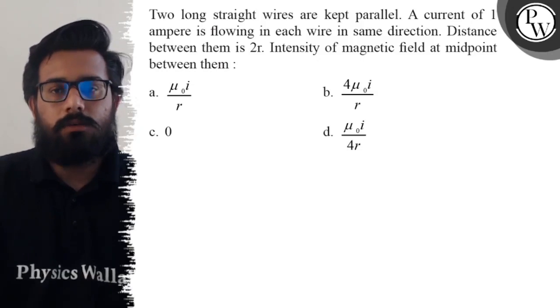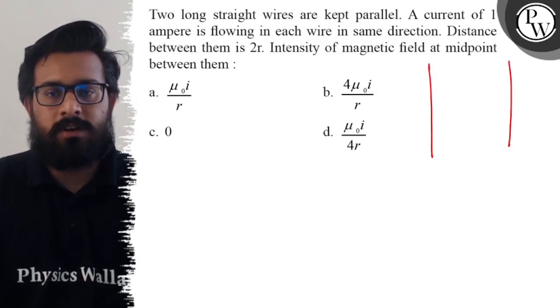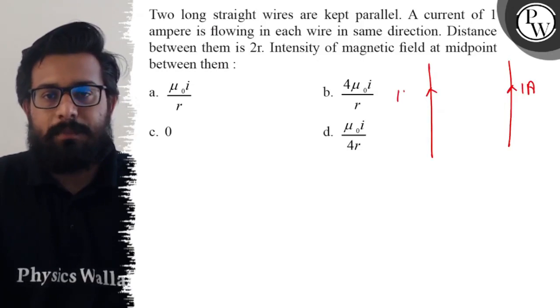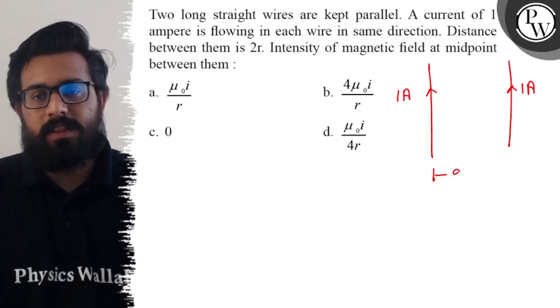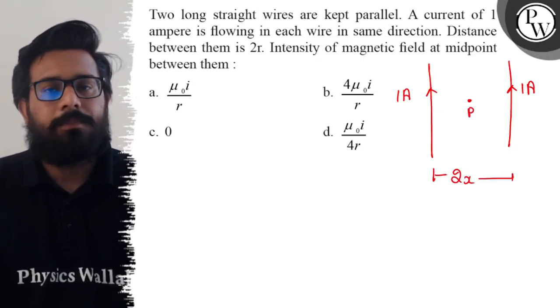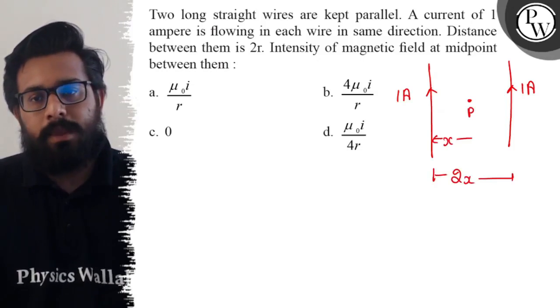So these two straight wires have the same current flowing in the same direction. The separation between the wires is given as 2x. In between, point P is the midpoint.